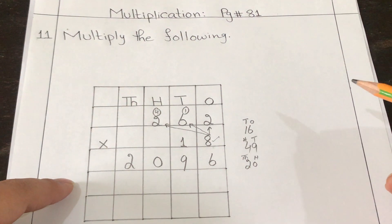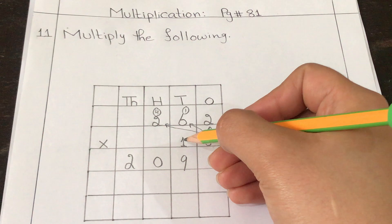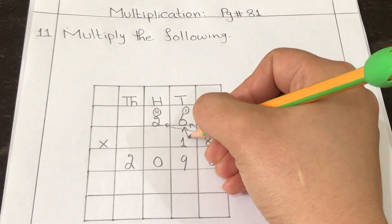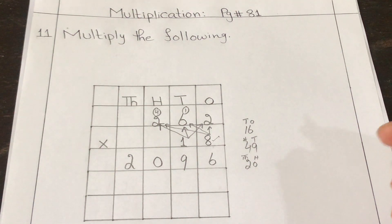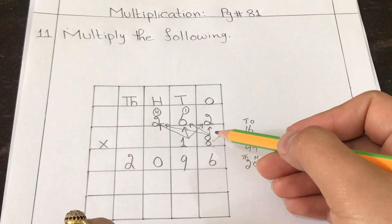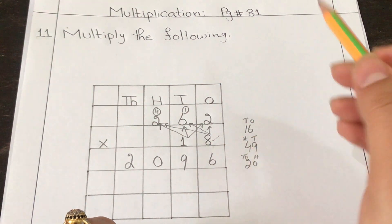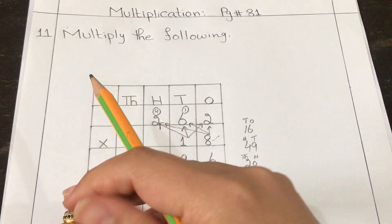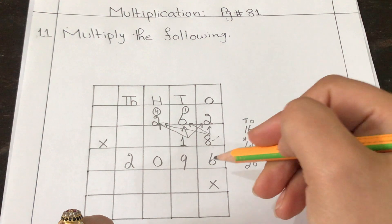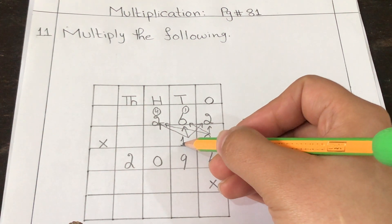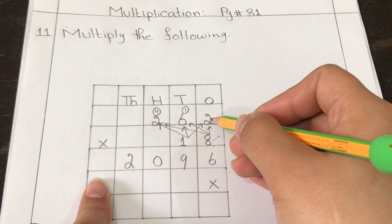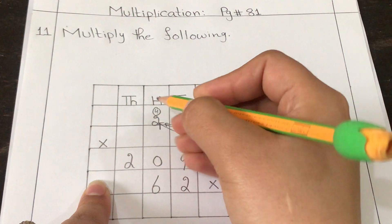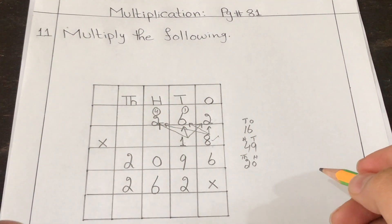Next, we multiply with one — the digit in the tens place — first with two, then with six, and finally with two. Since we've finished multiplying the ones place, the ones column is crossed out in this step. Multiply one by two: two ones are two; six ones are six; two ones are two.